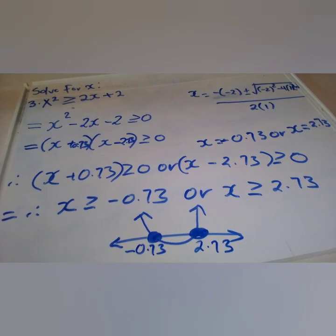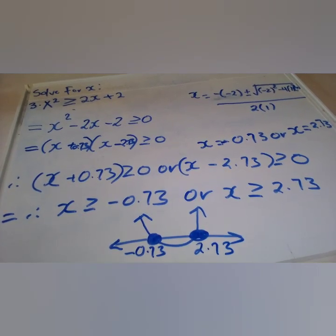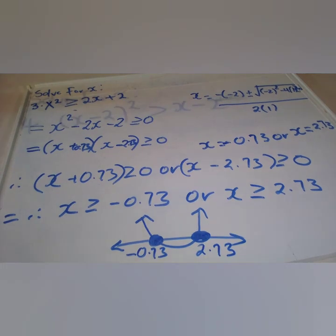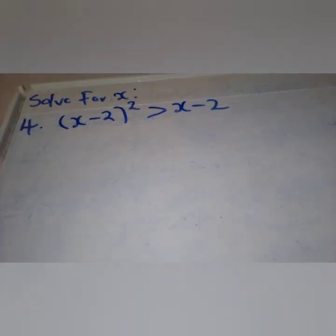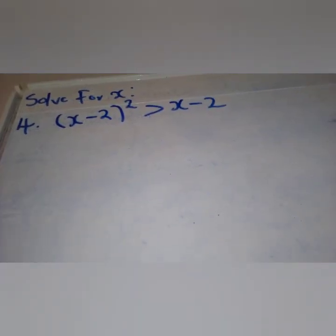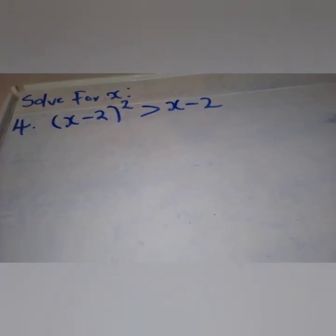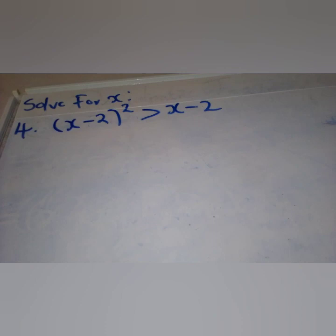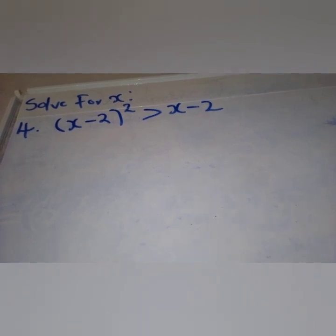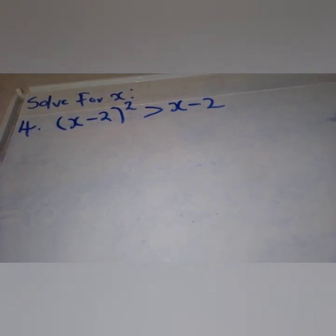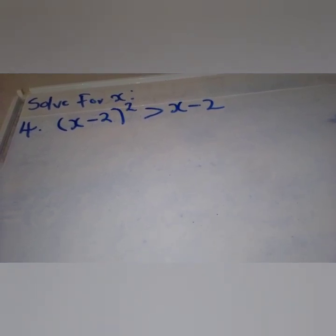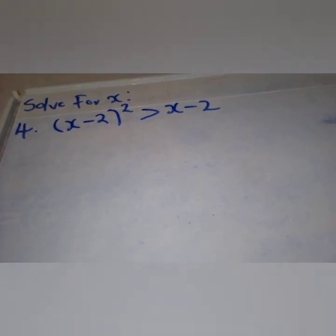Bear in mind: whenever you cannot find critical values easily, use the quadratic formula. When you get your answers, place them with their opposite signs in the brackets.